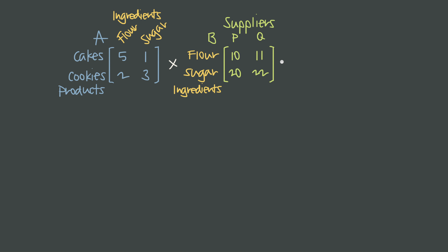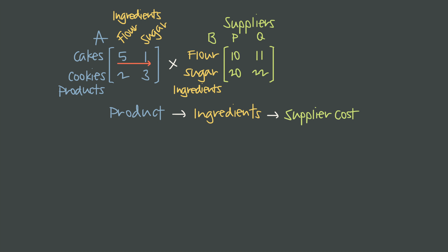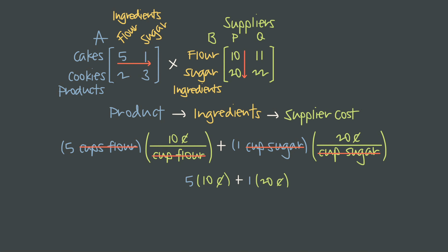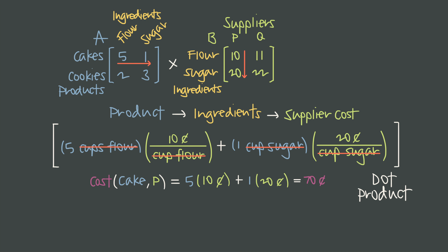Here's our question: how much does it cost to make a cake if we use supplier P? We can determine that using matrix multiplication — multiplying these matrices together to determine our costs, because what we're doing is chaining together products through ingredients to supplier costs. So to find the cost of a cake from supplier P, we multiply our ingredients — five cups of flour by their cost $0.10 per cup — then add one cup of sugar times the cost from supplier P. The sum simplifies to 5 times 10 plus 1 times 20, and the cost of a cake from supplier P is $0.70.